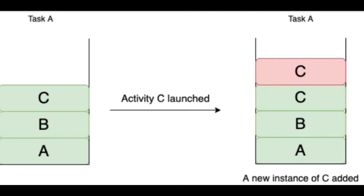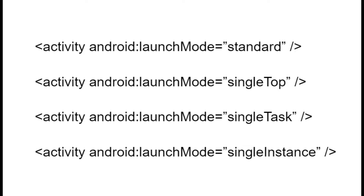For example, suppose we have three activities: Activity A, B, and C. If we are using Standard launch mode, then a new instance for each activity will be added every time the activity is opened from any other activity. We can add the launch mode for the activity in the manifest file.